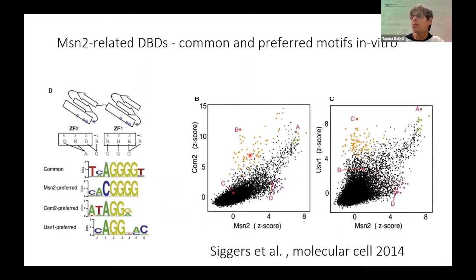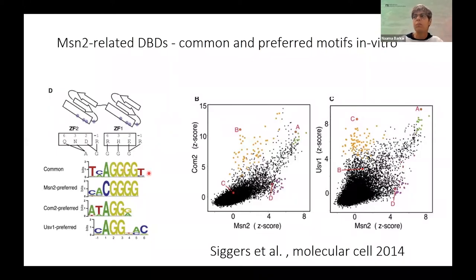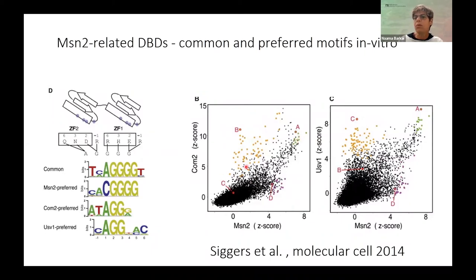There are many in vitro studies on the specificity of these transcription factors. One example from the Bulyk lab: they prepared an in vitro chip with all possible 8-mer DNA sequences to see how each transcription factor binds to those different 8-mers. Looking at two examples, MSN2 and COM2, each point represents an 8-mer and shows binding to each factor. They are indeed very related — both COM2 and MSN2 bind overlapping 8-mers, but some are bound only by COM2, which we expected to come from the DNA binding domain.